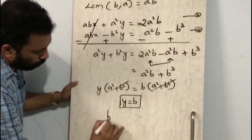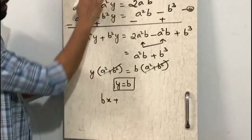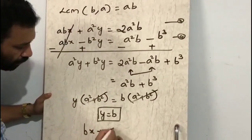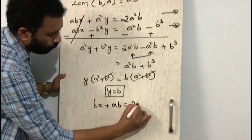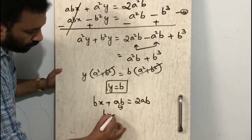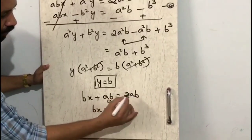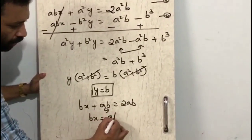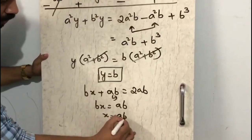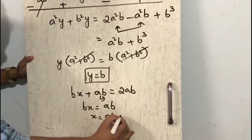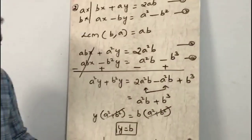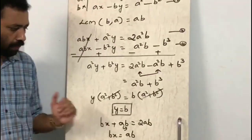Substituting y = b into the first equation: bx + ay = 2ab, so bx + ab = 2ab. Therefore bx = 2ab - ab = ab, so x = ab/b = a. Therefore x = a and y = b.